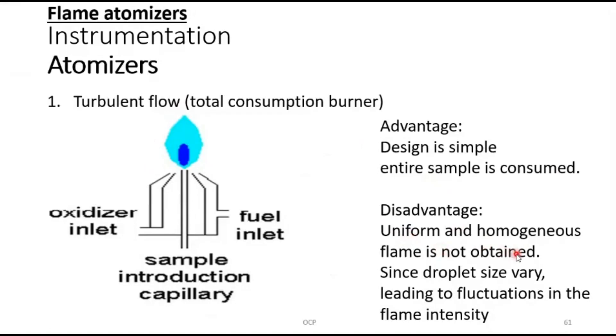What are the disadvantages? Uniform and homogeneous flame is not obtained. The flame is bound to flicker. Since droplet size will vary, this leads to fluctuation in the flame intensity.